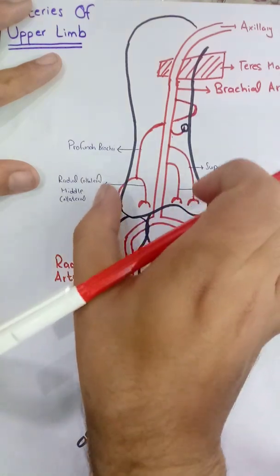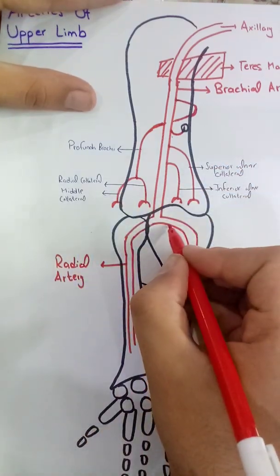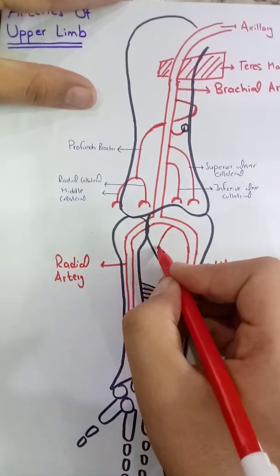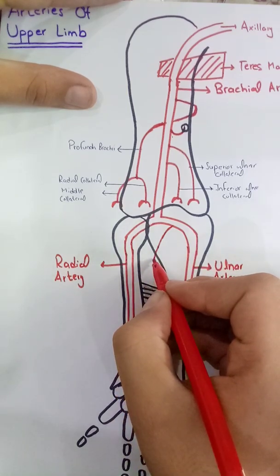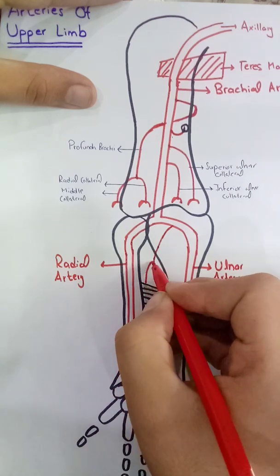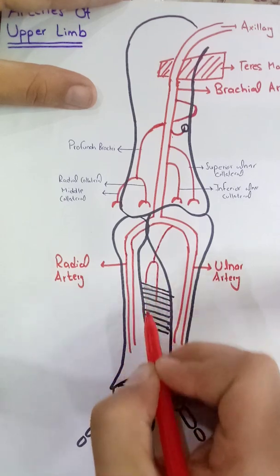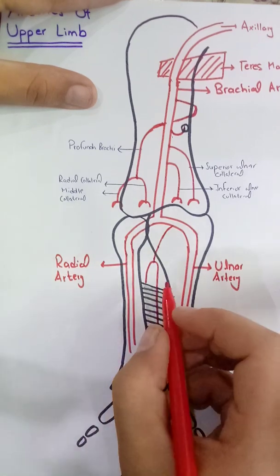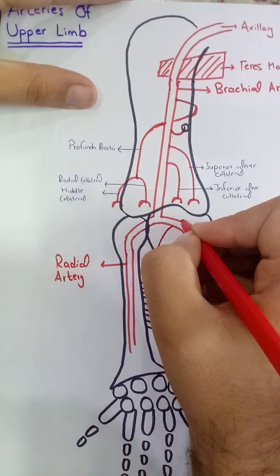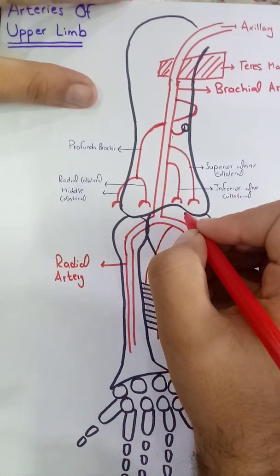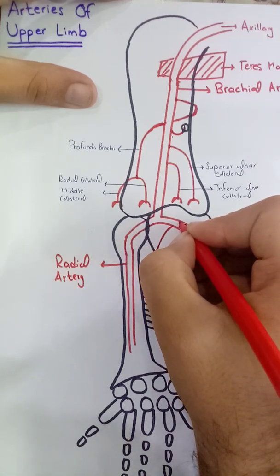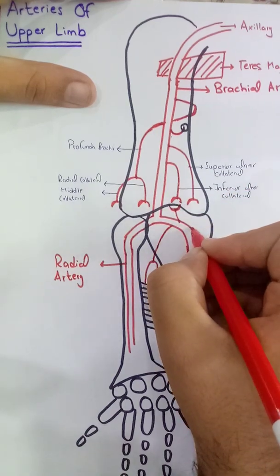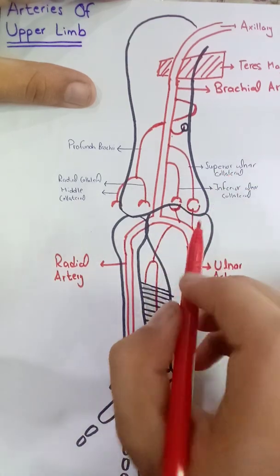Now we will complete the anastomosis around the elbow joint. The first branch of the ulnar artery will be the common interosseous branch, which divides into the anterior interosseous and the posterior interosseous. The posterior interosseous moves posterior to the interosseous membrane and the anterior interosseous moves anterior to it. The ulnar artery also gives the posterior ulnar recurrent and the anterior ulnar recurrent. The anterior ulnar recurrent anastomoses with the inferior ulnar collateral, anterior to the medial epicondyle, and the posterior ulnar recurrent anastomoses with the superior ulnar collateral branch.